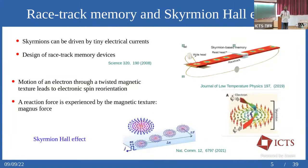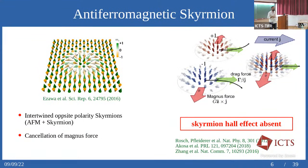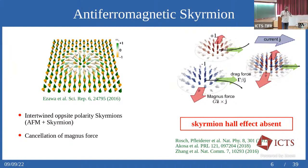One answer to the skyrmion Hall effect problem seems to be given by antiferromagnetic skyrmions — combinations of antiferromagnets and skyrmions. You take a linear combination of an antiferromagnetic texture with a skyrmion, and now there are two competing forces acting due to the two sublattices that cancel out. Such objects can be driven straight on a racetrack.